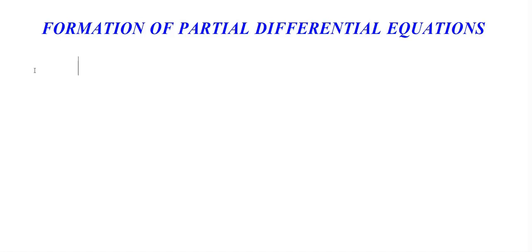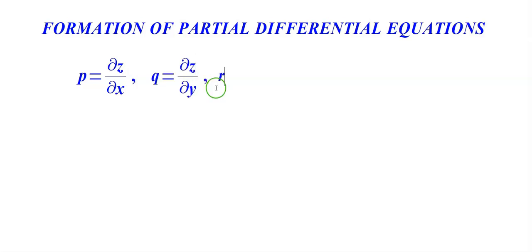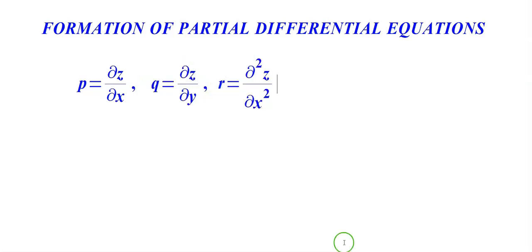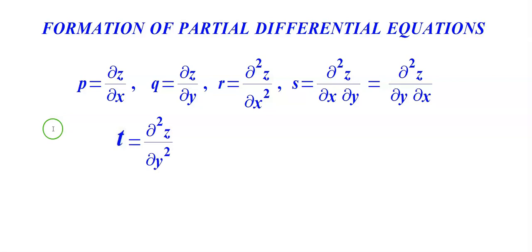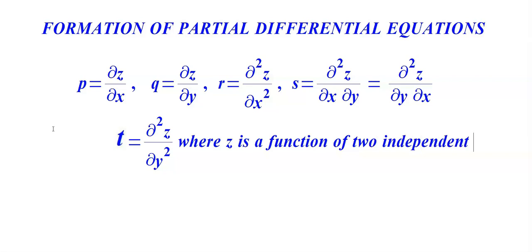There are five notations which are used to form the partial differential equation. Understanding and remembering each of them are essential for solving problems in this section. The five notations are: p = ∂z/∂x, q = ∂z/∂y, r = ∂²z/∂x², s = ∂²z/∂x∂y, and t = ∂²z/∂y², where z is a function of two independent variables x and y.